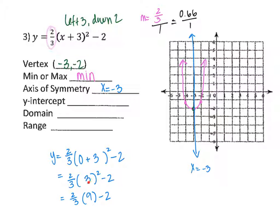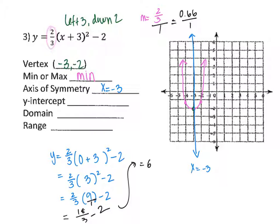For the y-intercept, I plug in 0 for x: 2/3 times (0 plus 3) squared minus 2. Inside the parentheses: 0 plus 3 gives 3. Then 3 squared gives 9. Now 2/3 times 9 — put 9 over 1 and multiply across: 2 times 9 is 18, 3 times 1 is 3, giving 18/3 which equals 6. Then 6 minus 2 equals 4. So the y-intercept is (0, 4).